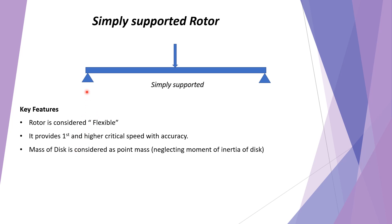Another assumption is that disk mass is considered as a point mass, meaning the moment of inertia of the disk is not considered. In coming videos, we can also calculate the critical speed considering the moment of inertia of the disk. However, in this video, disk mass is treated as a point mass and moment of inertia of the disk is not considered.